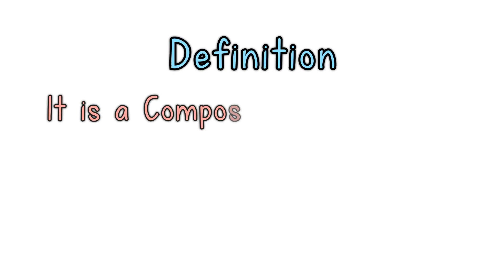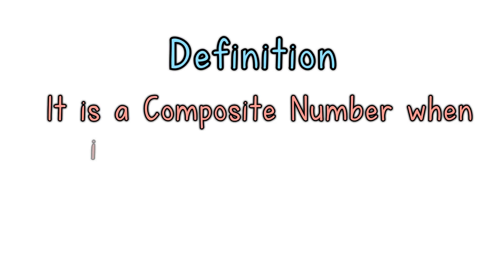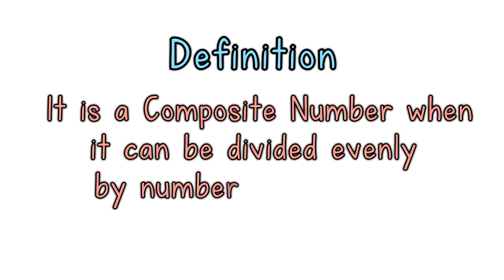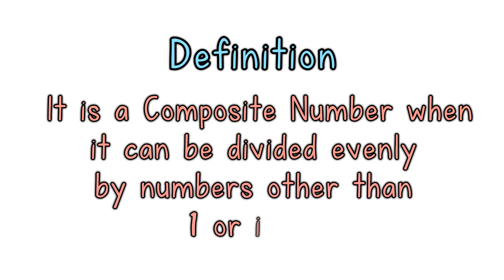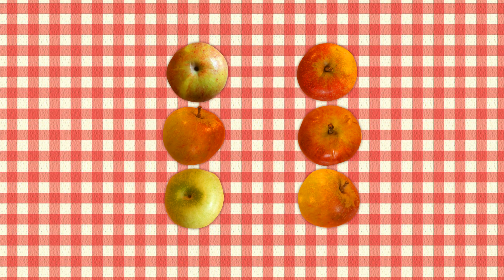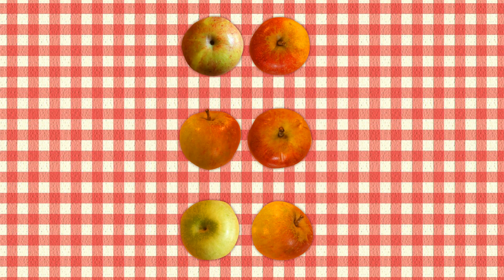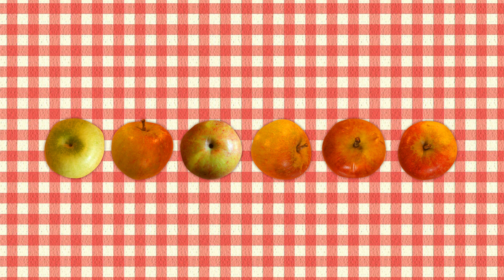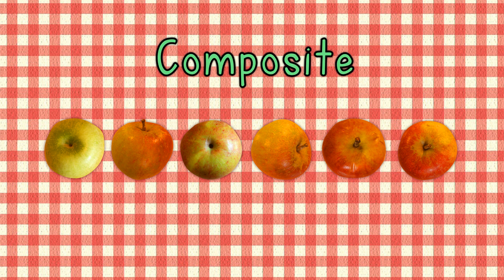Definition: It is a composite number when it can be divided evenly by numbers other than 1 or itself. Example — we now have 6 apples. Is 6 a prime number or composite number? 6 can be divided evenly by 2 or by 3, as well as by 1 or 6. So 6 is a composite number.